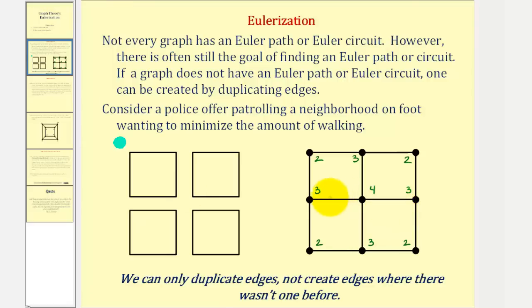So for example, we want to connect this vertex to this vertex, we have to duplicate this edge as well as this edge. Notice now the degree of this vertex is four, and so is this, the degree of this vertex is now six.